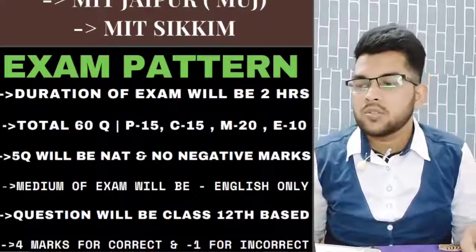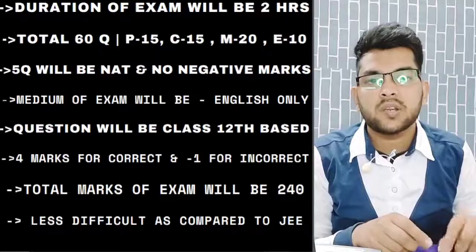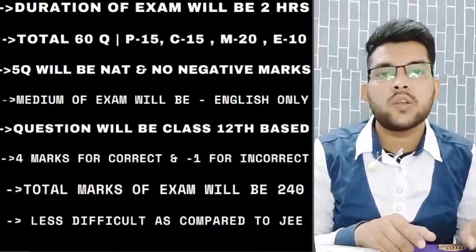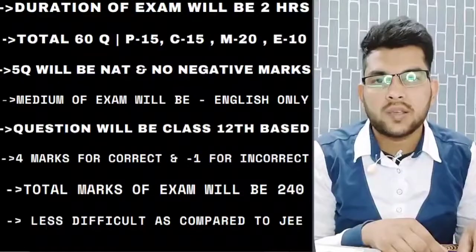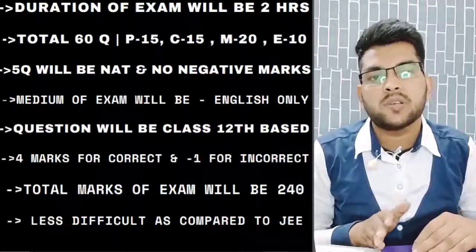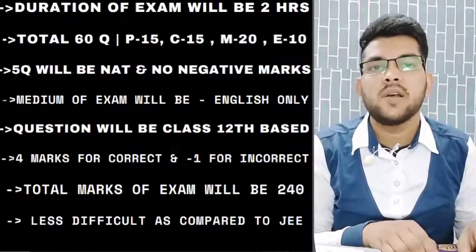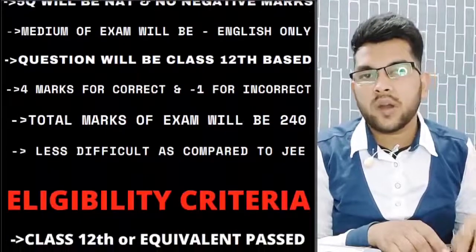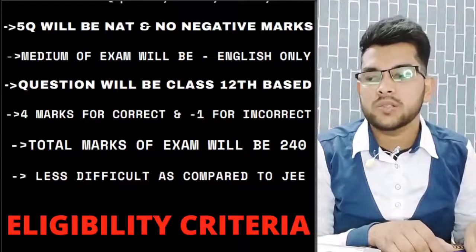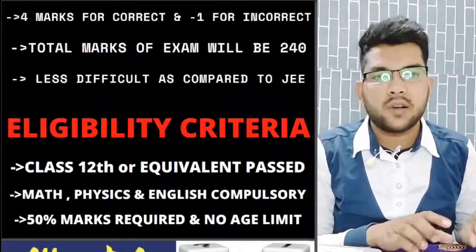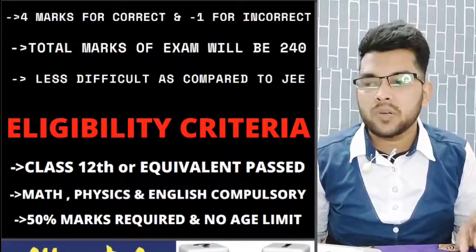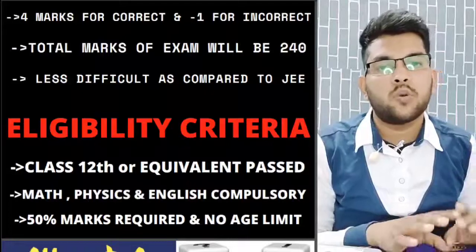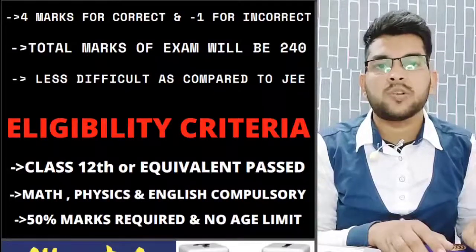The total marks of the examination is 240, that is 60 questions multiplied by 4. The difficulty level of this paper is less compared to the JEE exam, based on previous year papers. Regarding eligibility criteria: the student should have passed class 12 or an equivalent examination with physics, mathematics, and English as compulsory subjects. A minimum of 50% marks is required. There is no age limit for this examination.